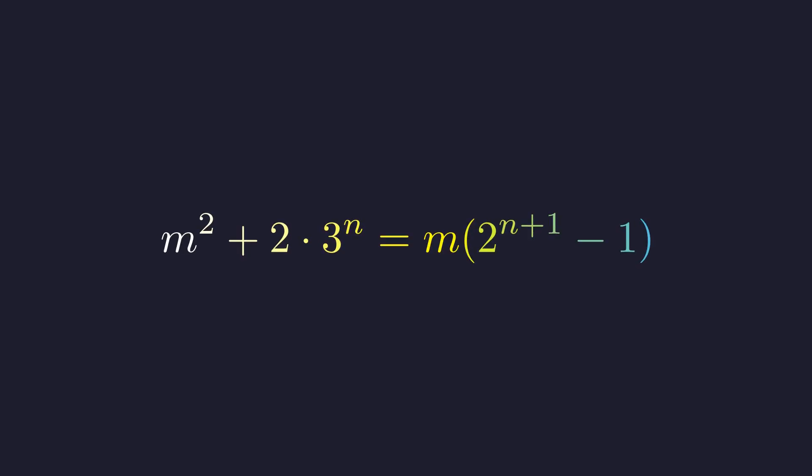We need to find all pairs of non-negative integers m and n that satisfy this equation. The structure, a mix of polynomial and exponential terms, suggests a number theory approach.